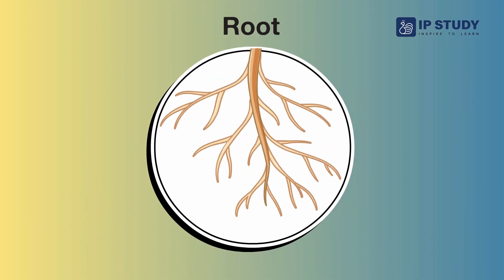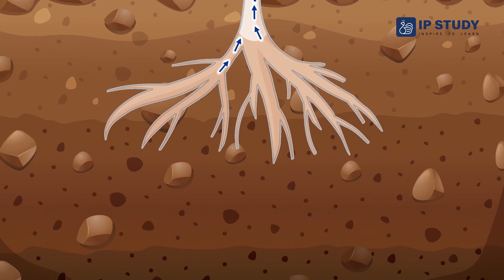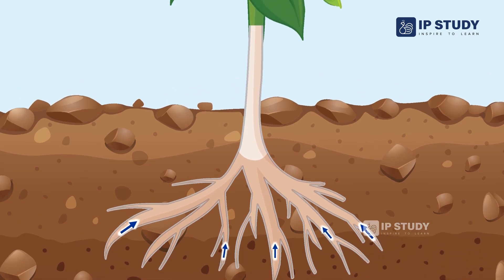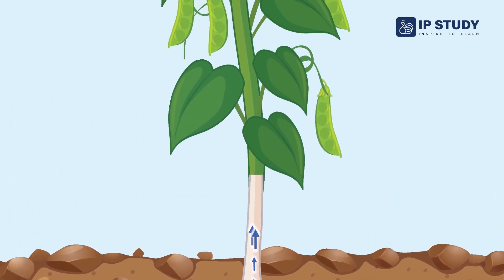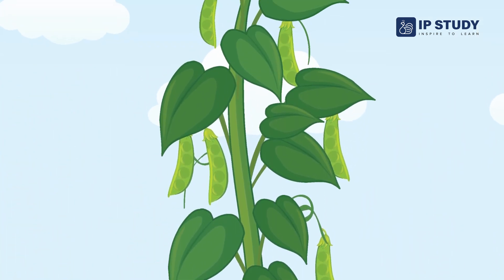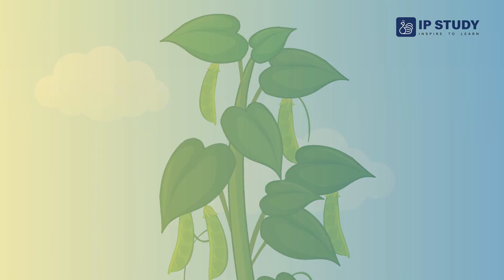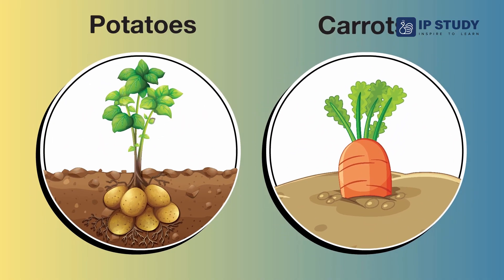Root. The roots anchor the plant in the soil and help it take in water. Roots absorb water and minerals from the soil and hold the plant in the ground so it does not fall over. Some roots we eat are potatoes and carrots.